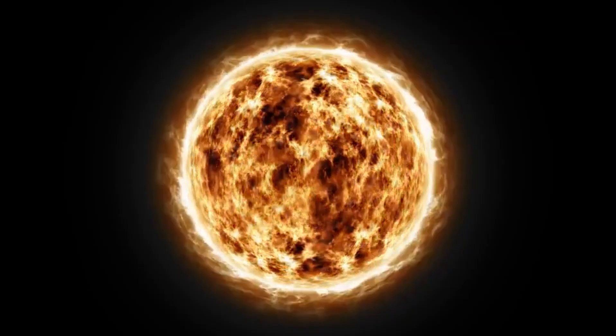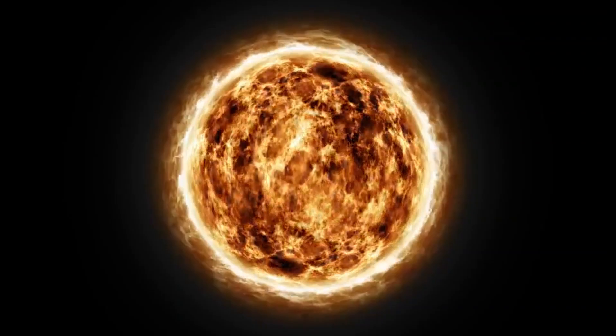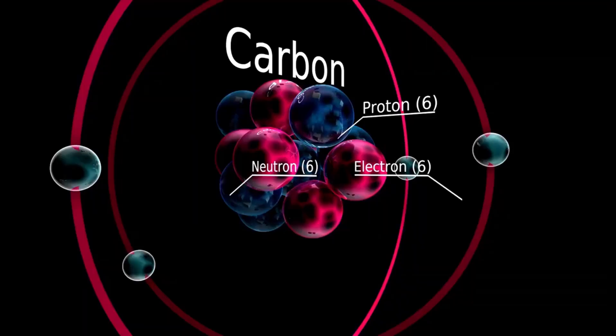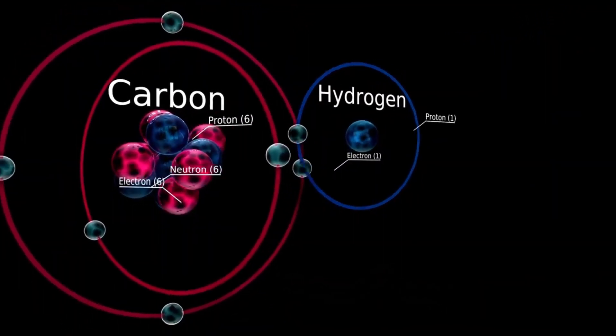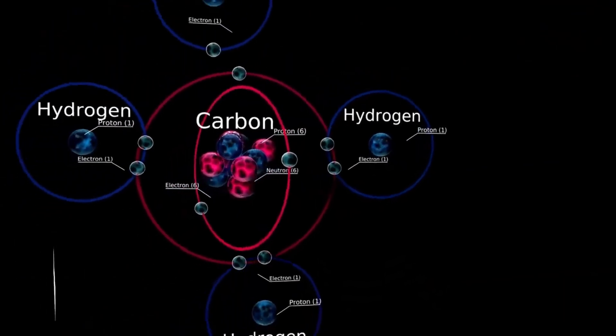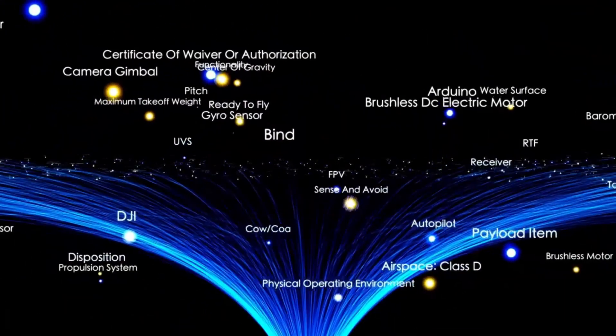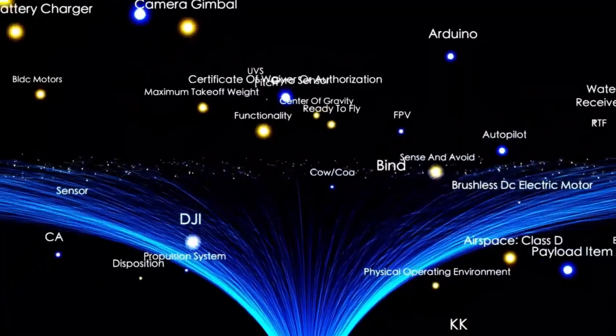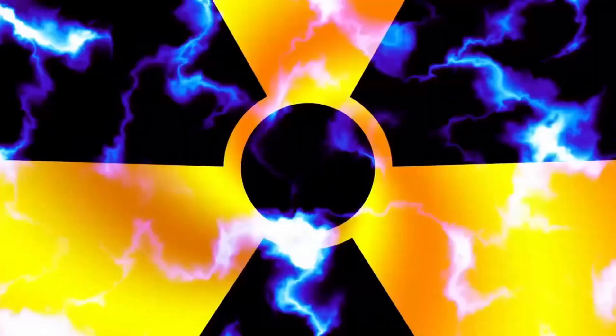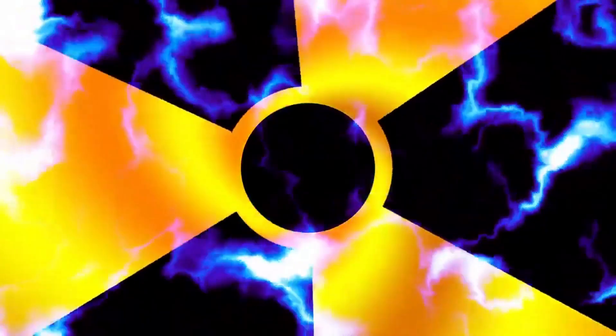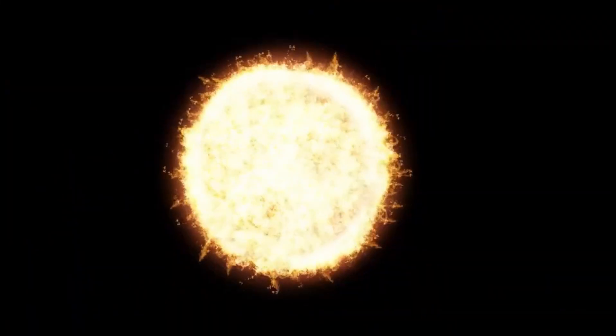These fluctuations are part of its natural life cycle as a red supergiant, but recent observations have revealed changes that are anything but ordinary. Between 2019 and 2020, Betelgeuse experienced a dramatic event known as the Great Dimming. During this period, the star's brightness dropped significantly, leaving astronomers puzzled and sparking widespread speculation about its fate.